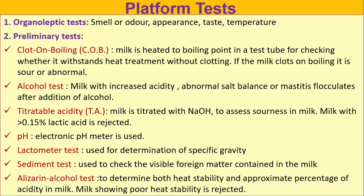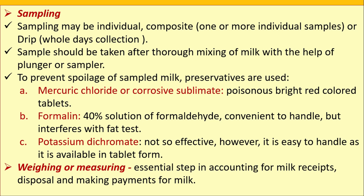Titratable acidity: milk is titrated with sodium hydroxide to assess sourness; milk with greater than 0.15% lactic acid is rejected. pH test: an electronic pH meter is used to check the pH of milk. Lactometer test: used for determination of specific gravity. Sediment test: checks for visible foreign matter. Alizarin alcohol test: determines both heat stability and approximate acidity — milk showing poor heat stability is rejected.